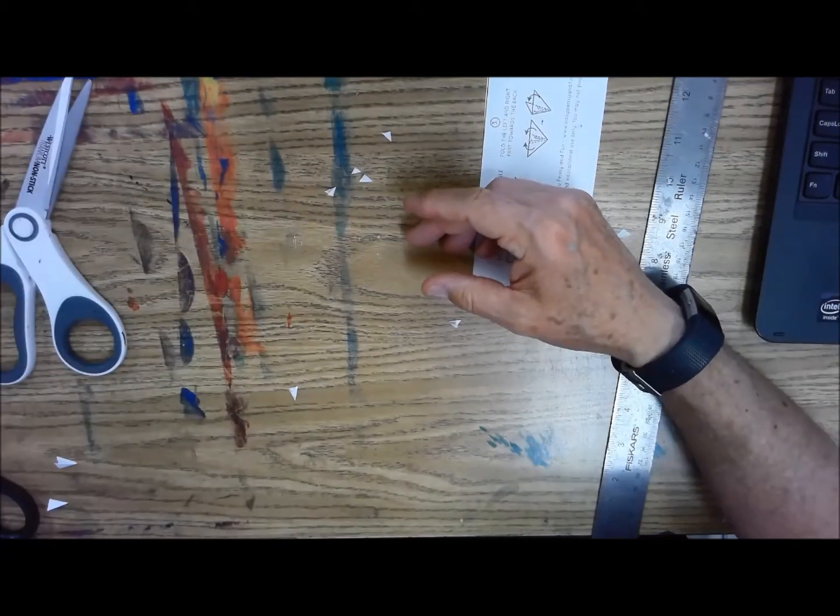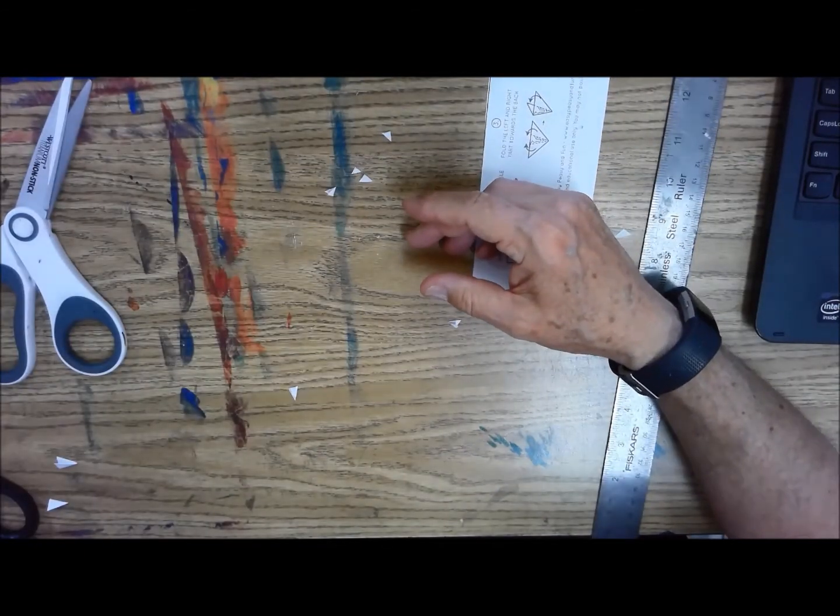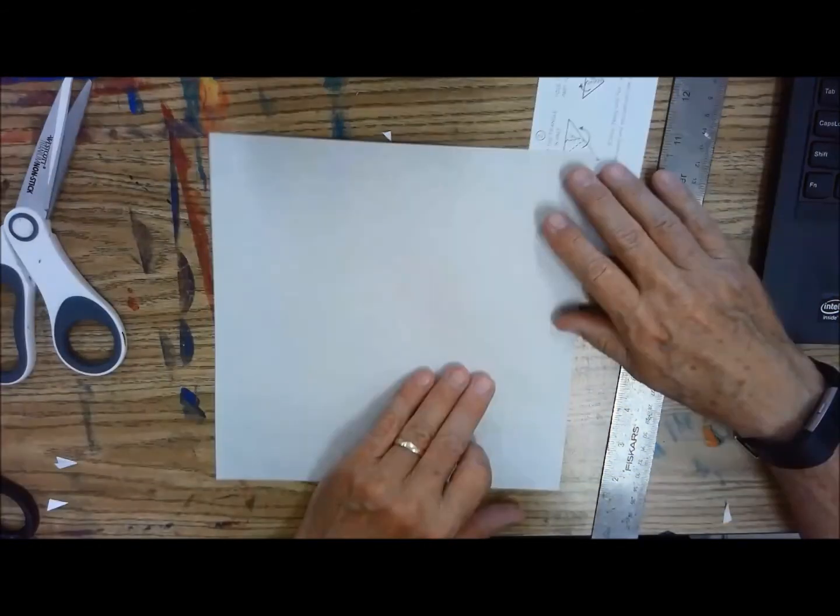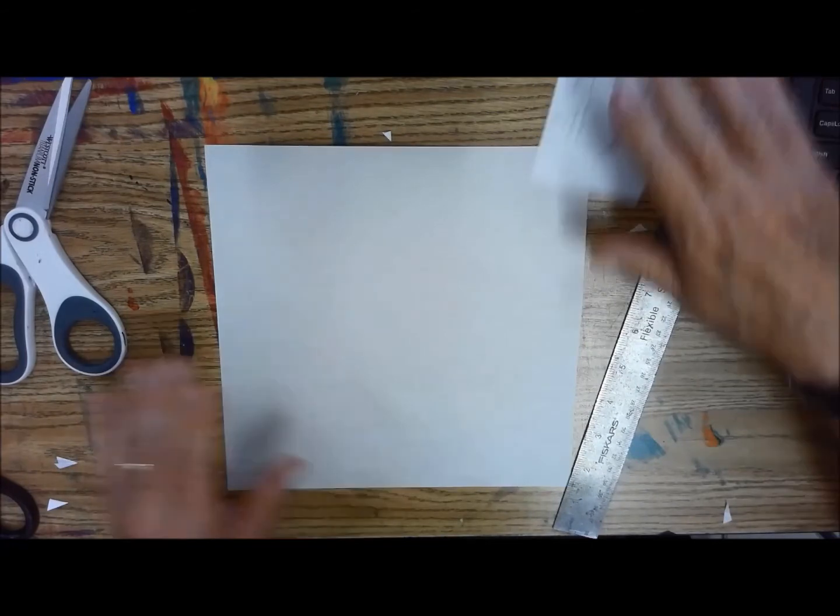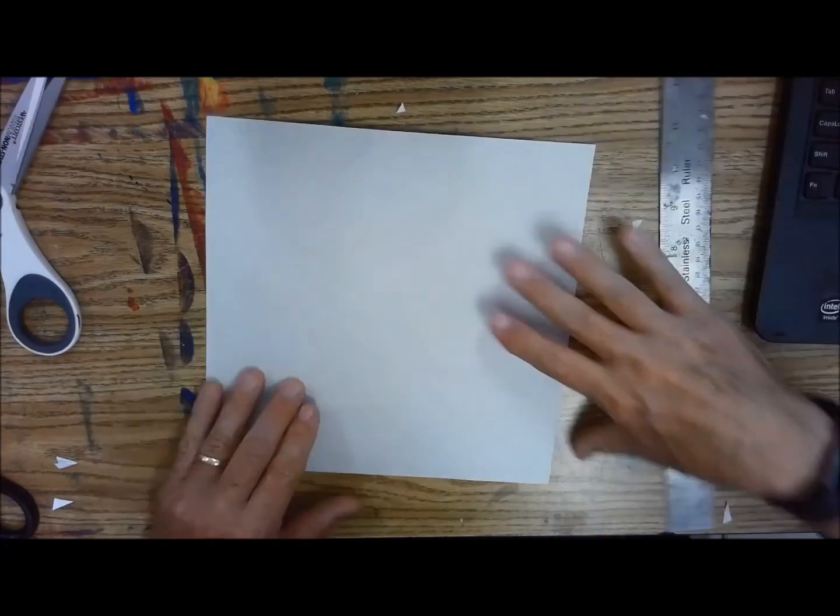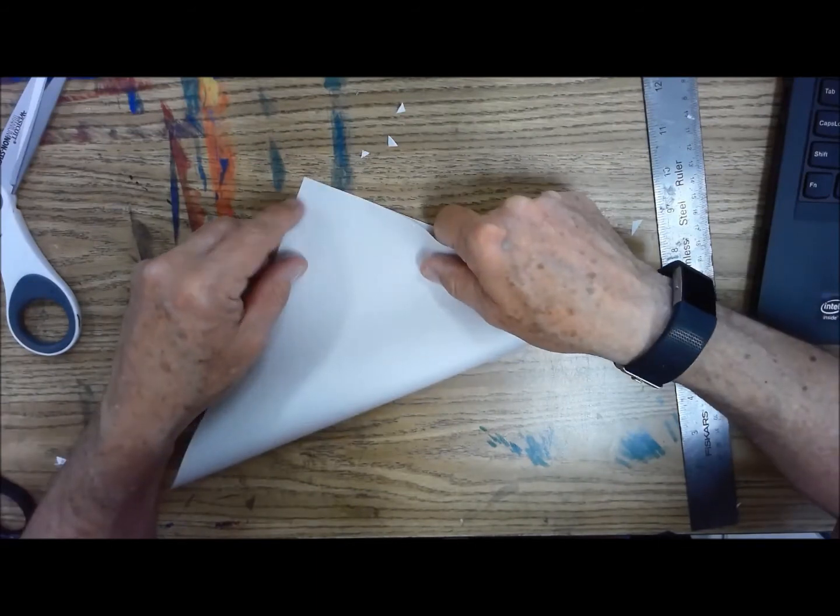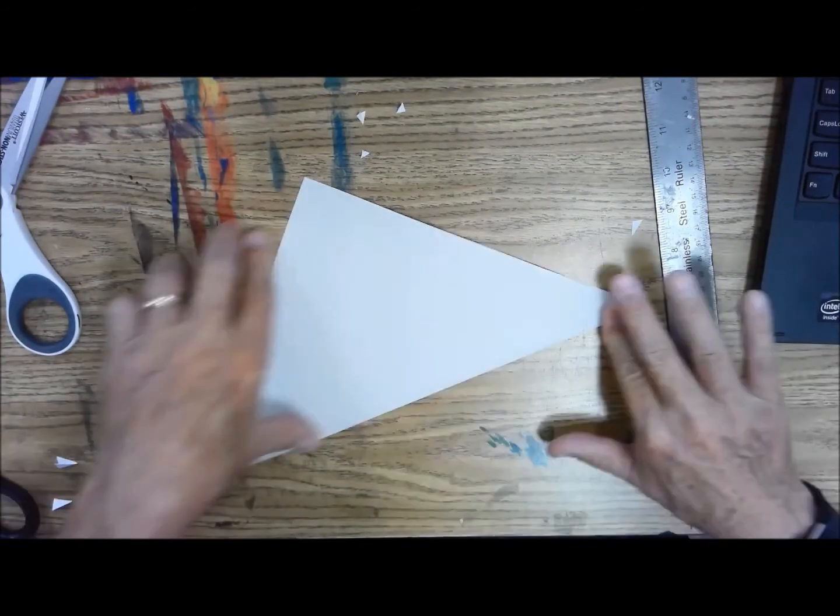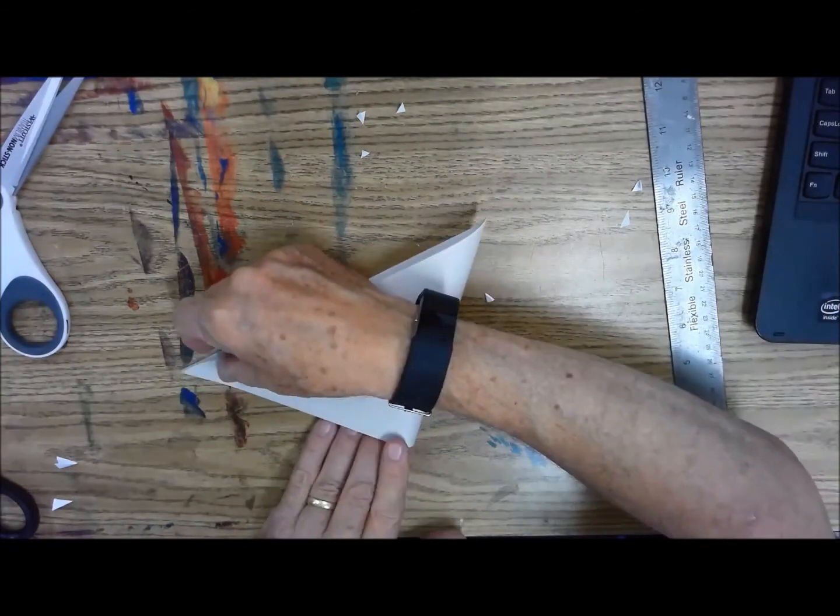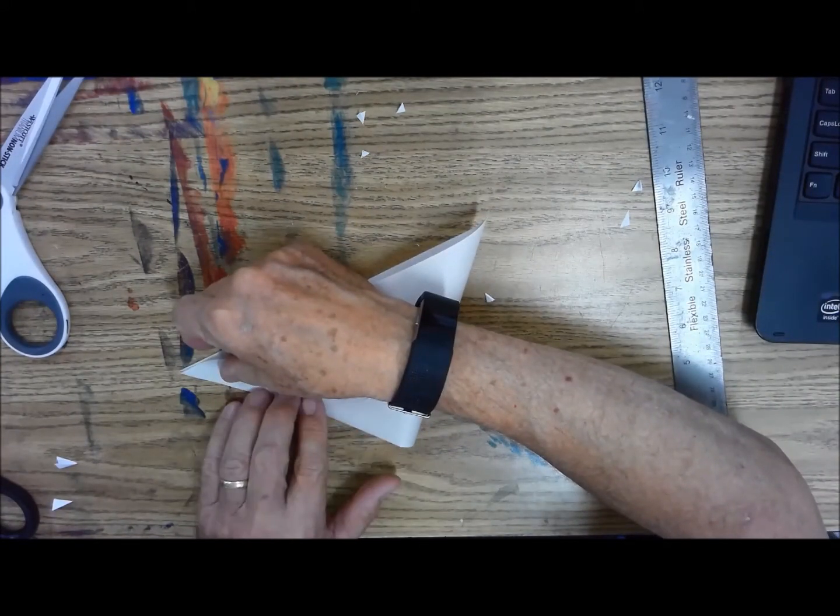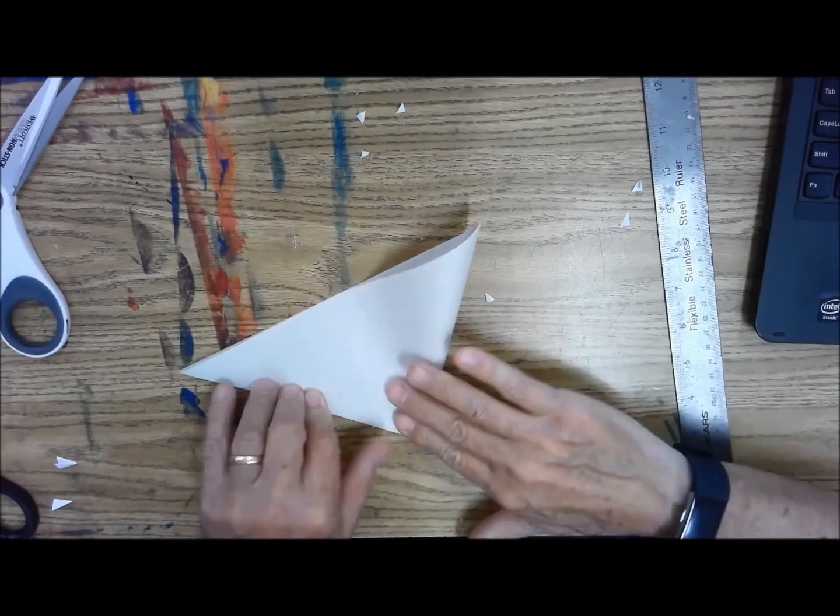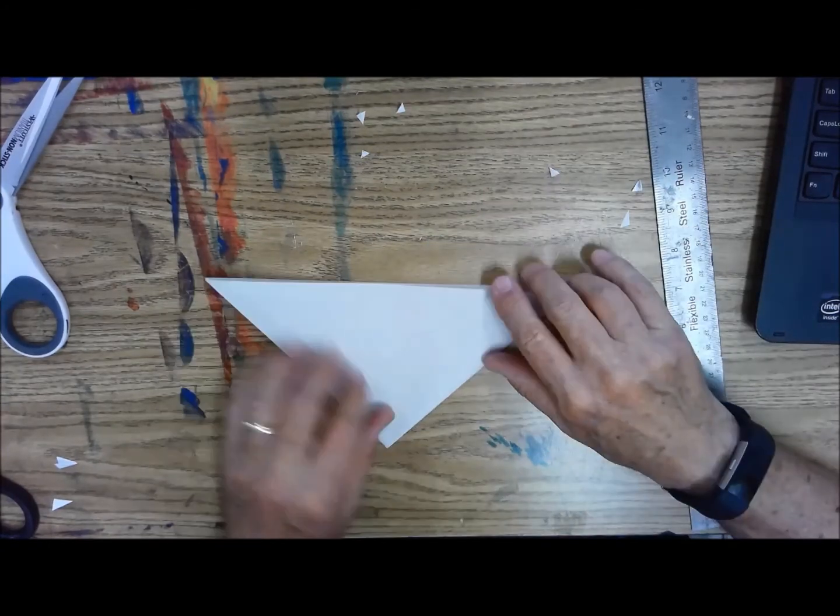So you can now pretend that you're Buddy the Elf and start decorating up your house with snowflakes. Now I'll show you how we do that on just a blank piece of paper without the guidelines. So we start off with a square piece of paper and fold it in half making a triangle. Then we fold this in half again making a smaller triangle.